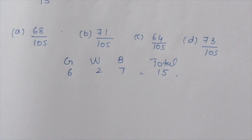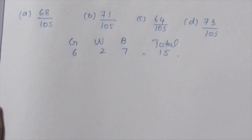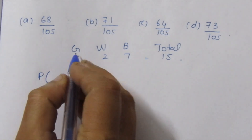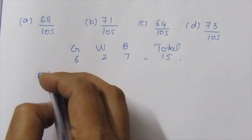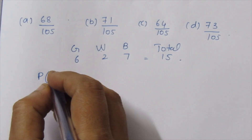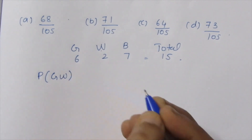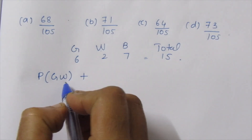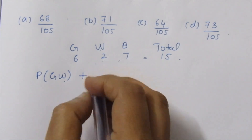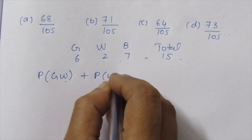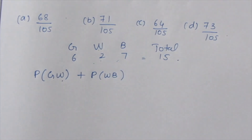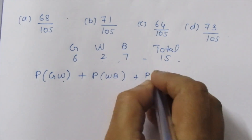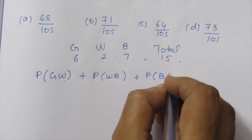Now, for different colours, what is the probability? We consider: green or white, plus white and black, or black and green — these are the different colour combinations possible.